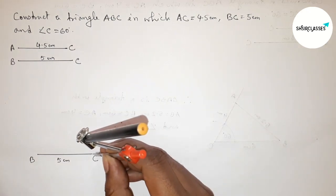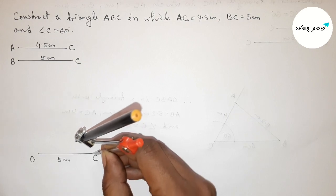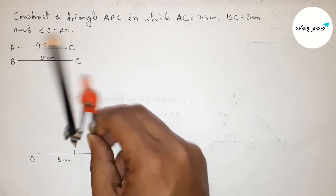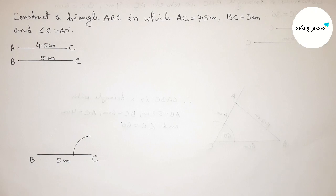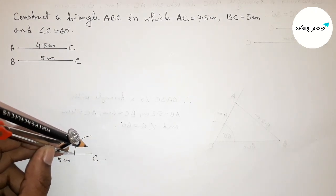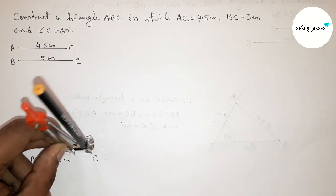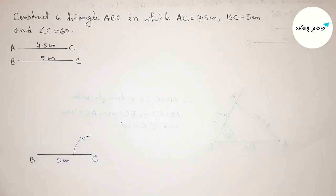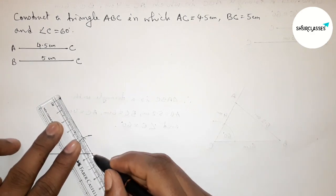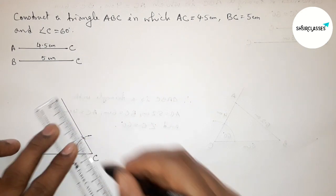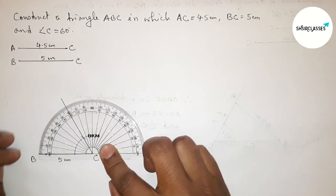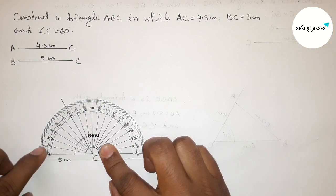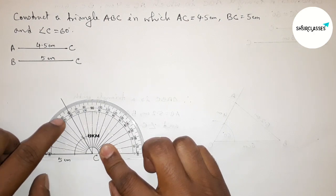Putting the compass on point C and taking any length, drawing an arc. Then putting the compass on that arc point, taking the same length, and cutting here. Now joining this line to get a 60 degree angle.